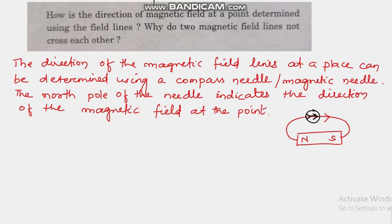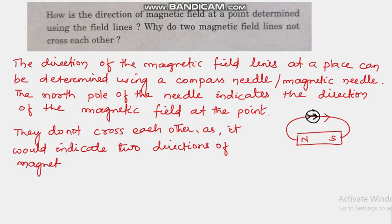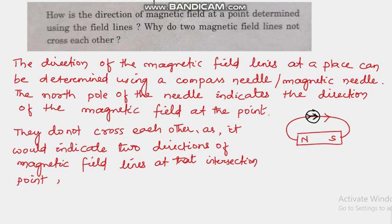The second part is: why do two magnetic field lines not cross each other? The answer is they do not cross each other as it would indicate two directions of magnetic field at that intersection point, which is impossible.